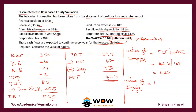The value of equity equals the value of the company minus the value of debt. The debt is 14 million but it is trading at 130%, meaning it is worth more than face value. Solving this gives 406.8 as the value of equity.